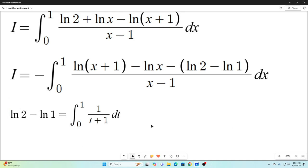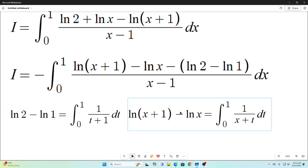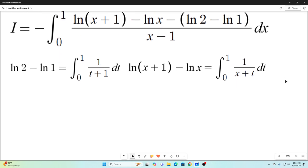So notice this: that natural log 2 minus natural log 1, which is exactly what we have here, is what you get when you evaluate this integral. Likewise, natural log x plus 1 minus natural log x, which is right here, is exactly what you get when you evaluate this integral. So we're going to replace those values with their integral representations, like this.